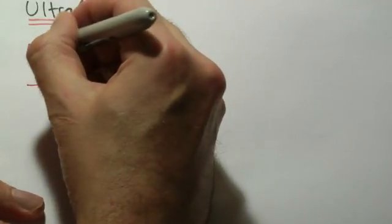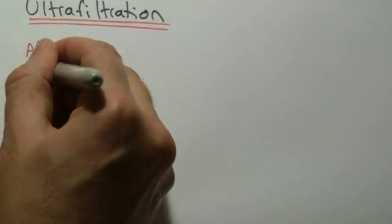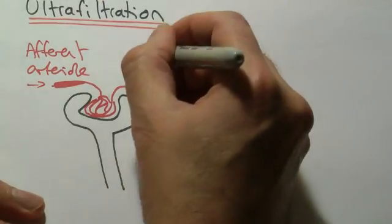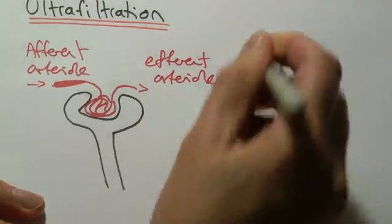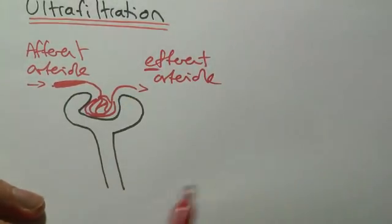Blood comes in this direction down what we call the afferent arteriole, and it flows out through the efferent arteriole. E for exit, that's the one that comes out.